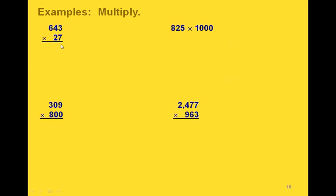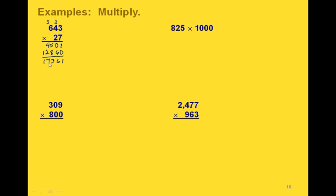In this one we again have a 3-digit number times a 2-digit number. We start with the 7 and multiply each of the three digits times 7. 3 times 7 is 21 — carry the 2. 4 times 7 is 28 plus 2 is 30 — carry the 3. 6 times 7 is 42 plus 3 is 45. For the 2, since it's actually 20, we write a 0 as a placeholder. 3 times 2 is 6, 4 times 2 is 8, and 6 times 2 is 12. Adding the columns: 1, 6, 5 plus 8 is 13 so carry 1, then 1 plus 4 plus 2 is 7, giving us a 1. Our answer is 17,361.